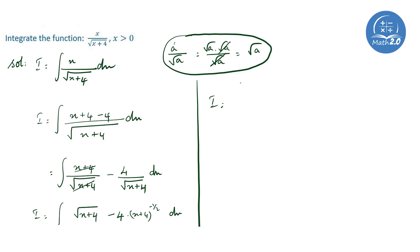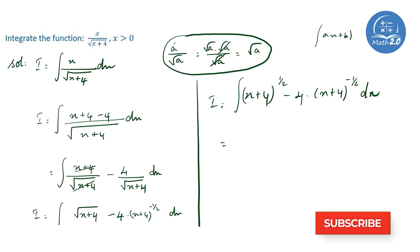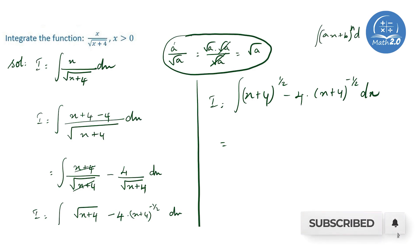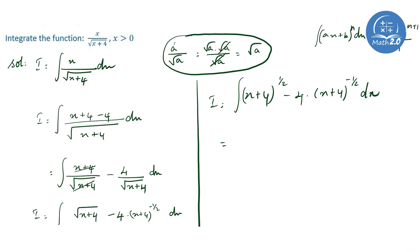So, next I is equal to the integral of x plus 4 to the power 1 by 2, minus 4 into x plus 4 to the whole power minus 1 by 2, dx. Here the identity used is: the integral of x plus b to the whole power n, dx equals x plus b to the whole power n plus 1, divided by the coefficient of x times n plus 1.